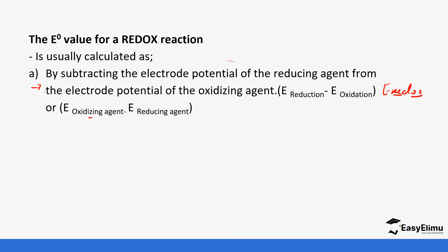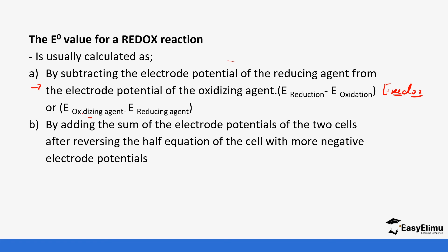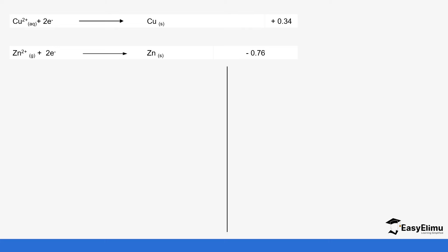You can use the formula to do your calculation, or you can add the sum of the electrode potentials of the two cells after reversing the half cell equation of the cell with the more negative electrode potential. I will show you both methods so that you can use either. Let's take for example this half cell — we have copper and zinc. If you were told to calculate the EMF of a cell formed by combining these two half cells.